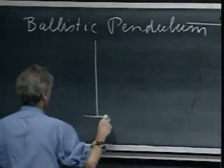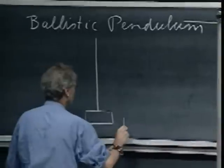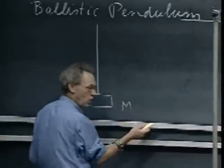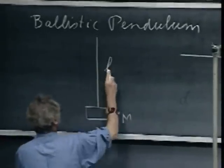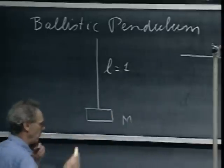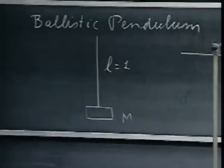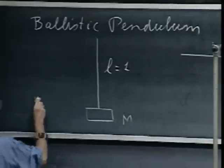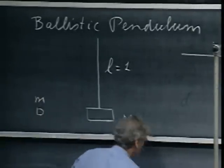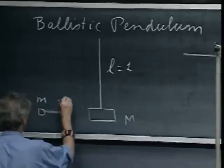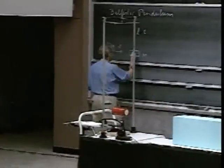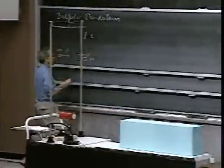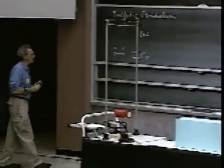We have a pendulum with a very heavy object hanging here at the end — I call it the block. This pendulum has length L; ours is about one meter. We have a bullet of mass little m, and the bullet comes in with velocity v, gets completely absorbed, sticks in there. It's a completely inelastic collision, and the pendulum will then pick up a velocity v prime with the bullet inside.